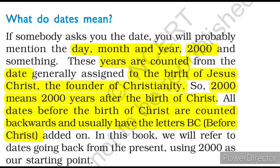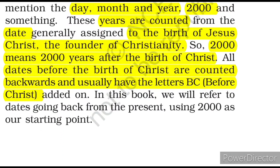Now, what do dates mean? In 2021, the dating system starts from the birth of Jesus Christ. Jesus Christ is the founder of Christianity. The year 2000 means 2000 years after the birth of Christ. If a date is before Christ, it is written as BC — Before Christ, or BCE — Before Common Era.